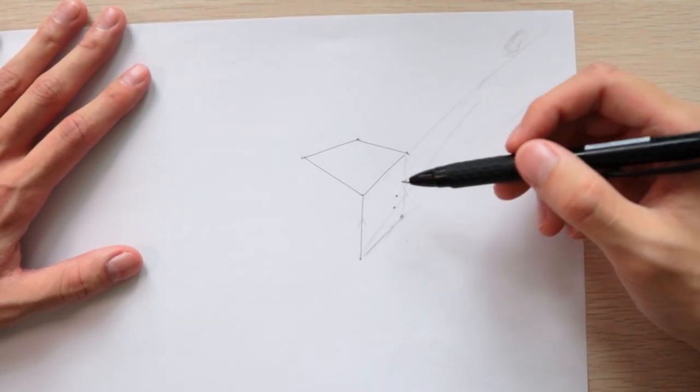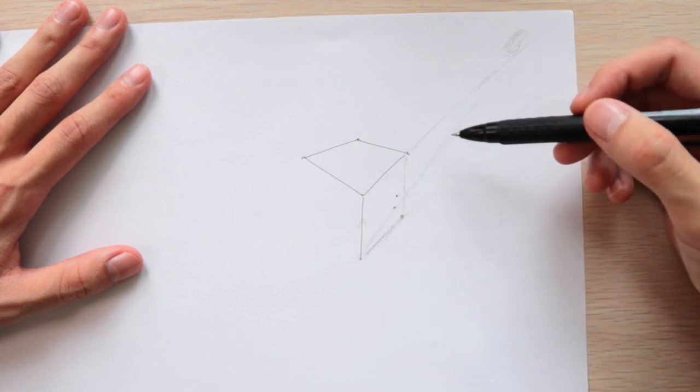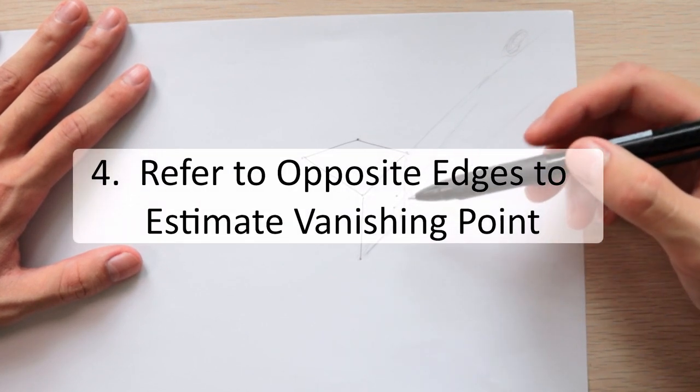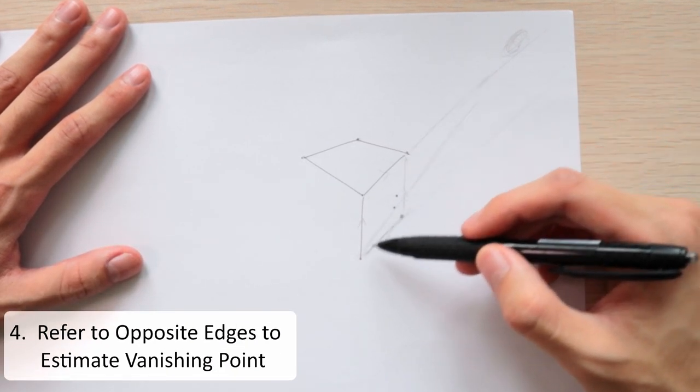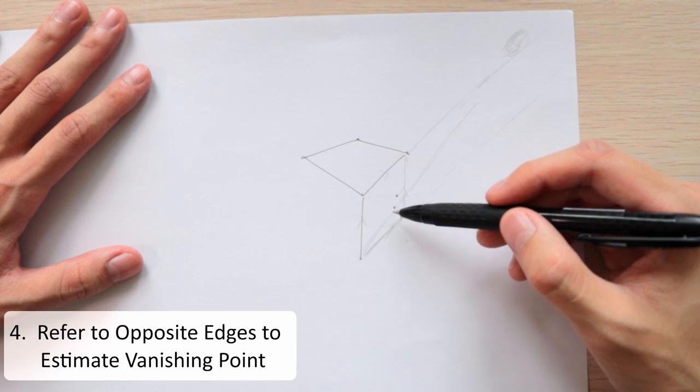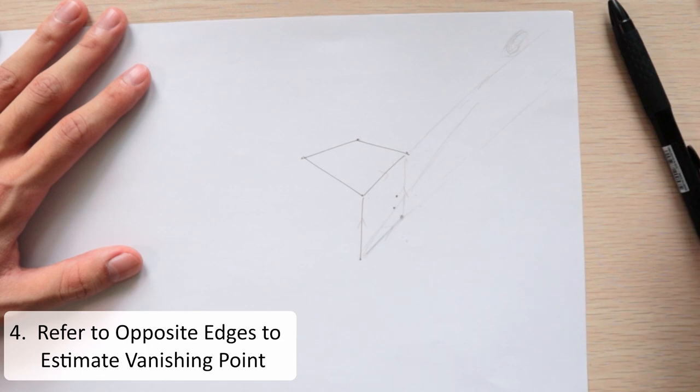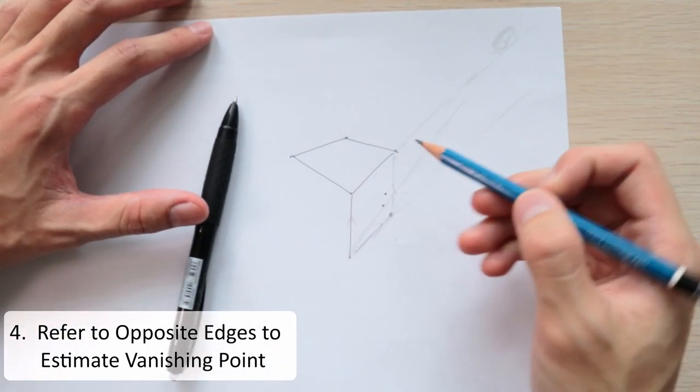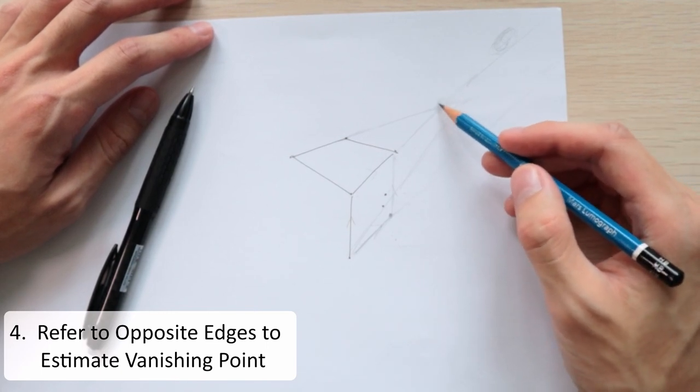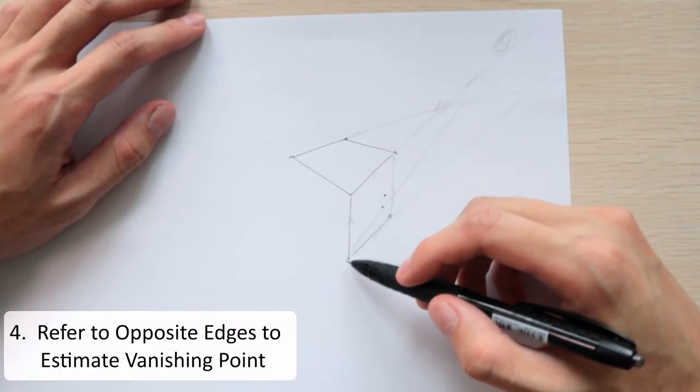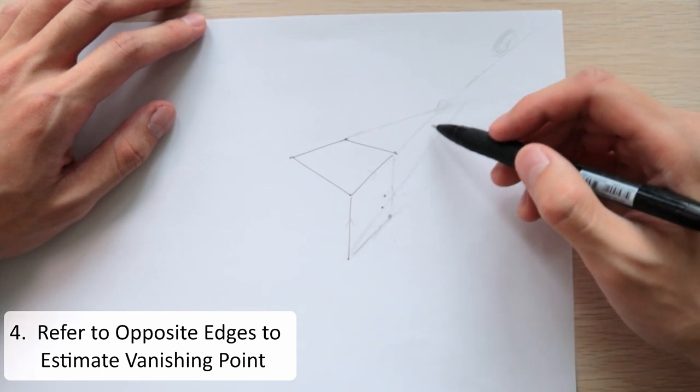So when I place the next corner, I can sort of check the position by estimating where the vanishing point is. How I do that is by looking at all the other edges of the box that are converging at the same vanishing point. If I want to join this edge, I will refer to this edge and this edge. I'm just gonna eyeball it here. Let me just use a pencil to kind of draw it in. You can see the vanishing point is actually around here. When I draw this edge from this corner to the vanishing point, my corner has to lie on this line.